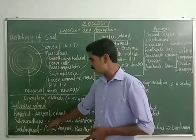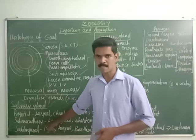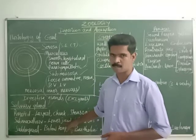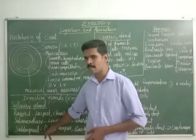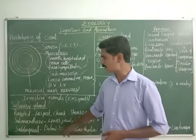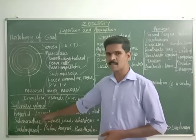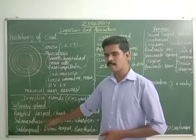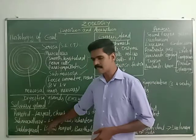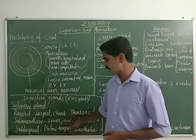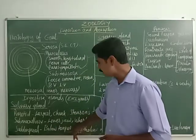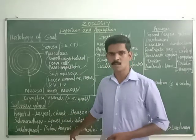The parotid gland is located in the cheek region. The second gland is called the submaxillary gland, and it is present in the lower jaw. The third gland is called the sublingual gland, and it is present below the tongue.